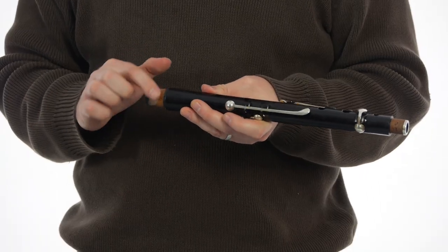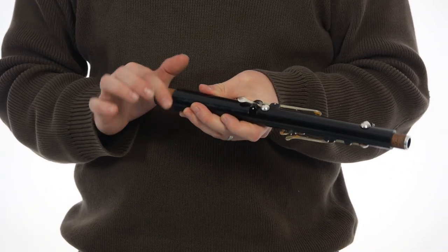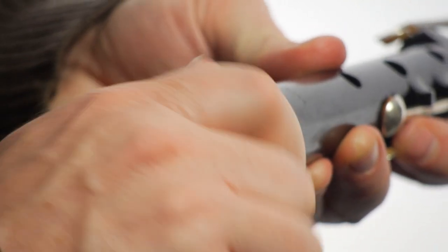Apply grease to corked tenons whenever they feel dry. This keeps the cork from absorbing excess moisture and swelling while playing.